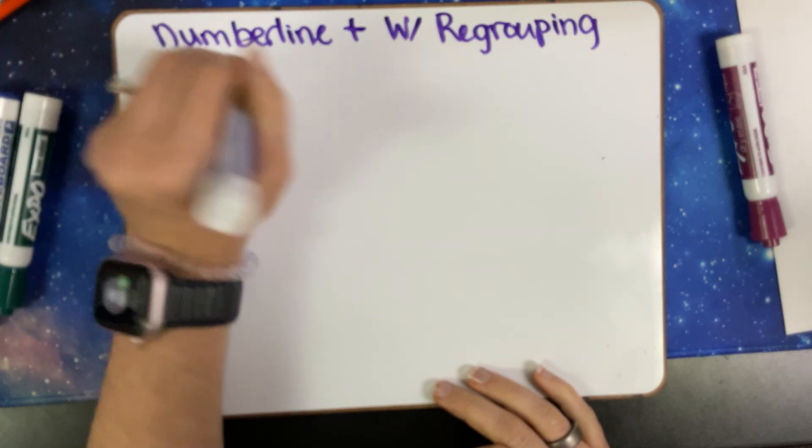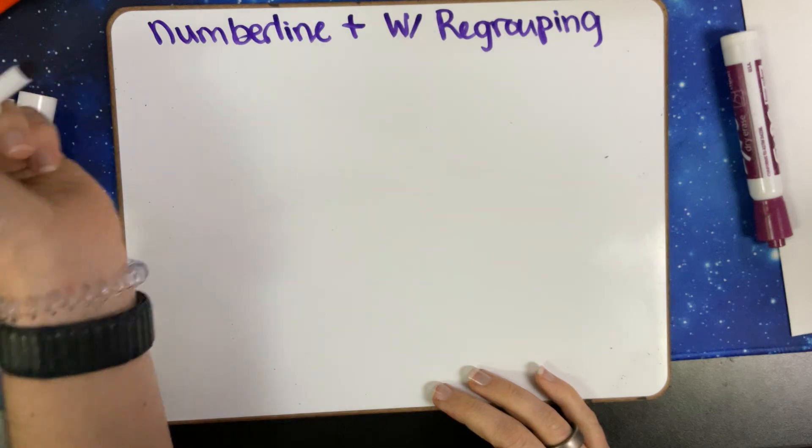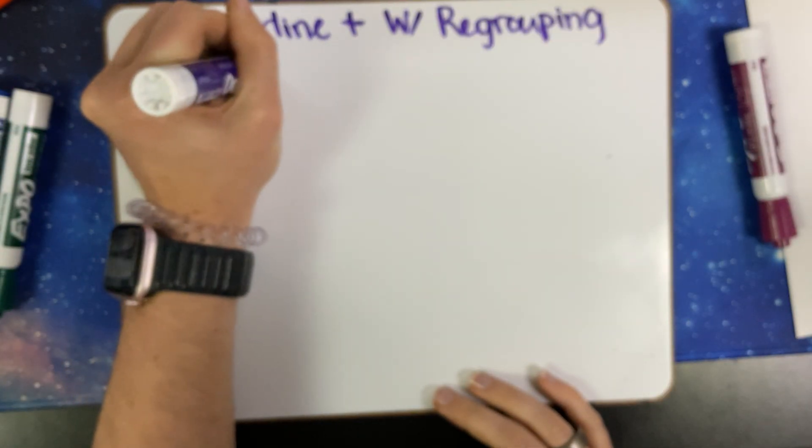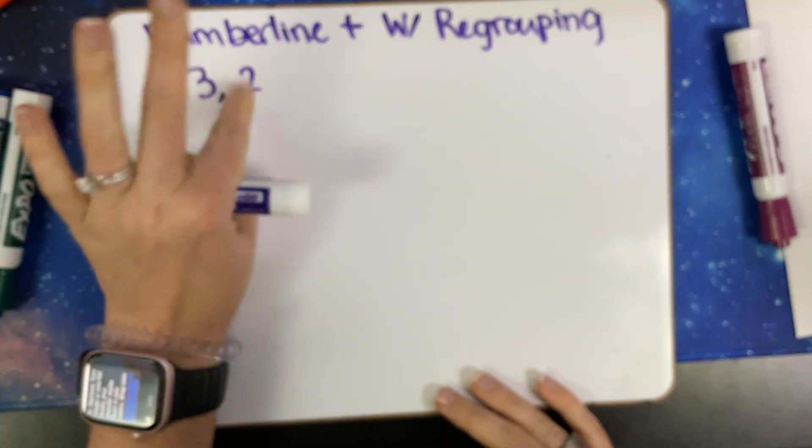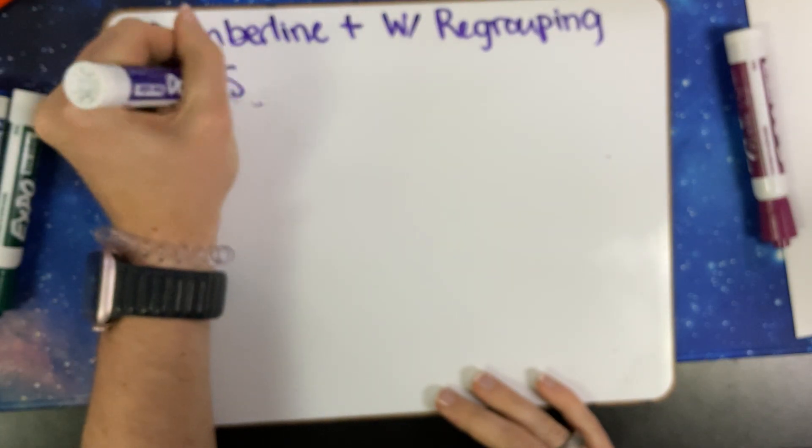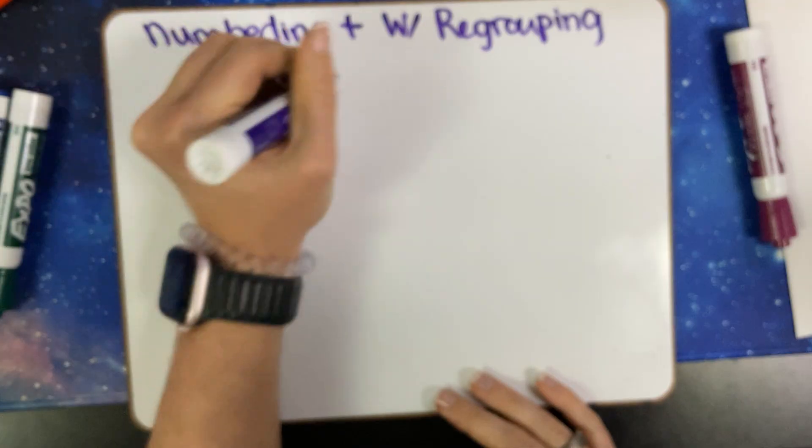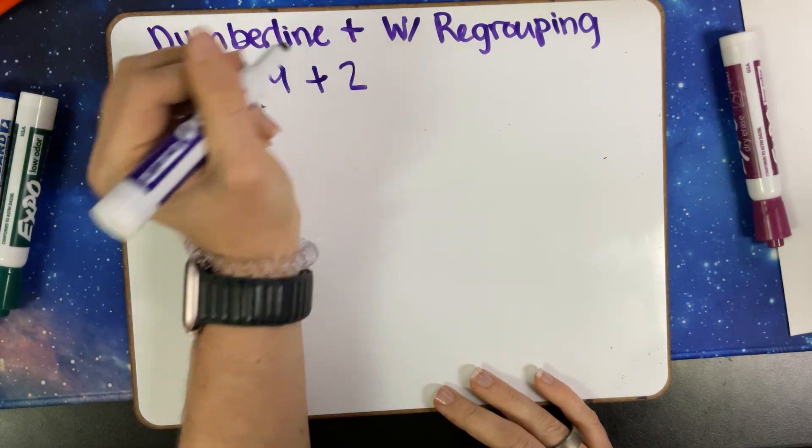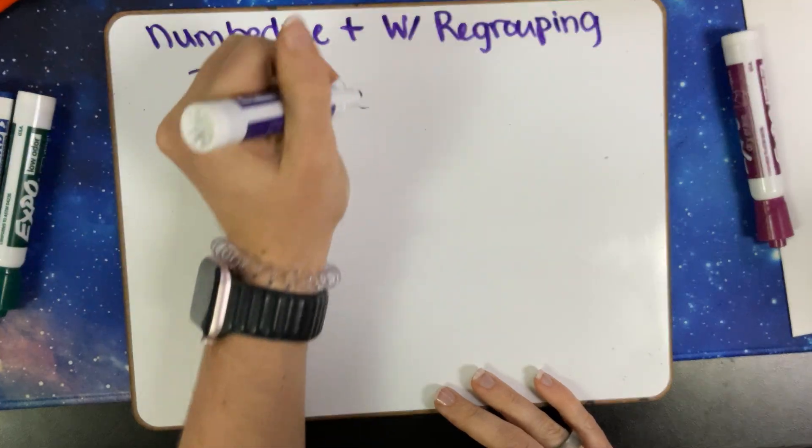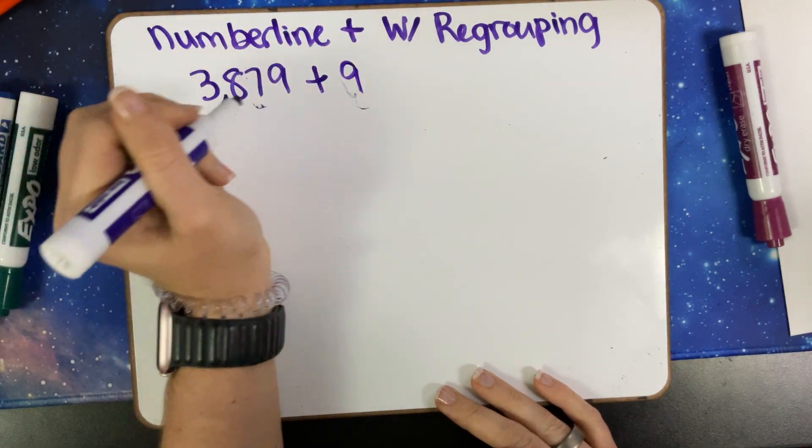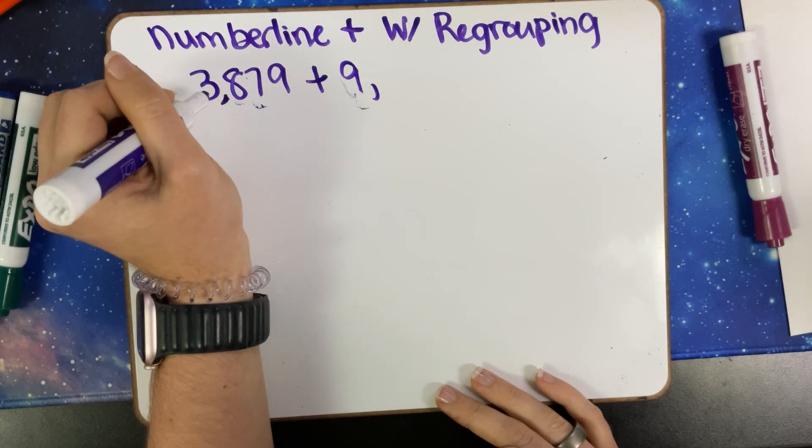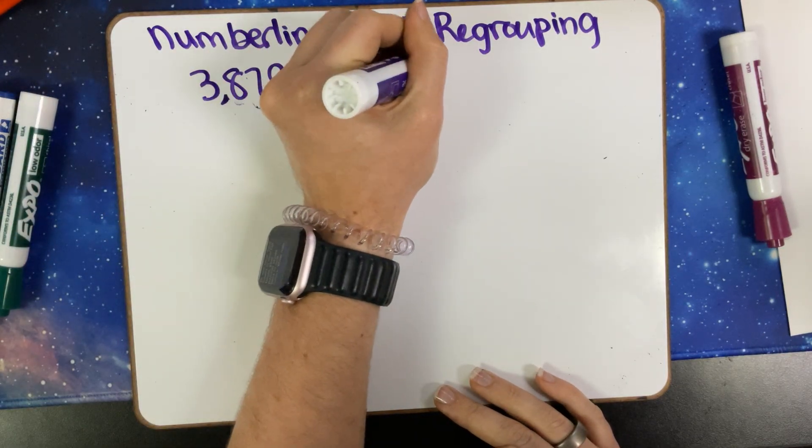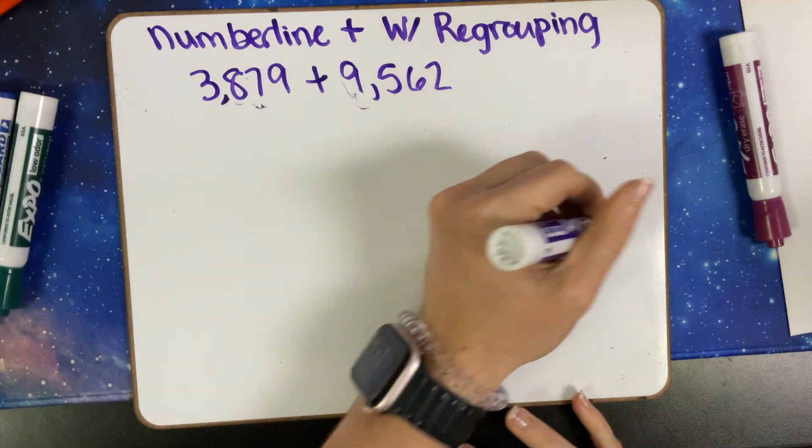For this number we're going to do a number in the thousands, so let's do 3,879 and we're going to add it to—I want to regroup all the way into ten thousands so let's make that 9,562. So we're going to have to regroup in every single place value.